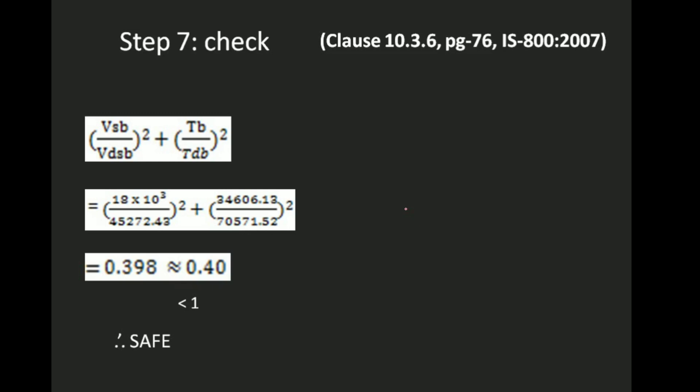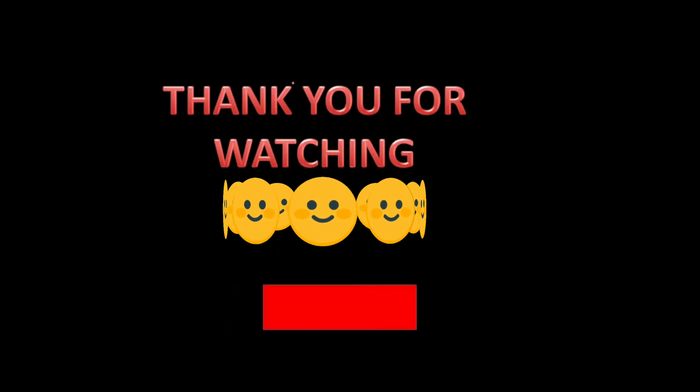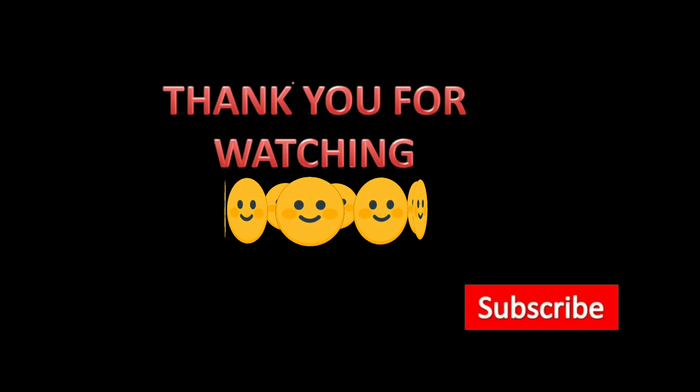This completes the problem on Type 2 eccentric bolted connections where we investigated safety. If asked to design such connections, we check this interaction condition and determine the number of bolts as shown in Type 1. If you missed the Type 1 video, please check the previous video for details on calculating the number of bolts. Thank you for watching — please like, subscribe, and comment if you have any questions.